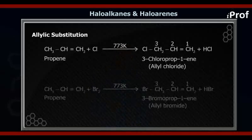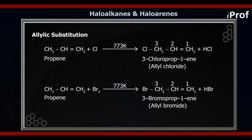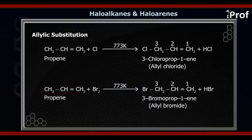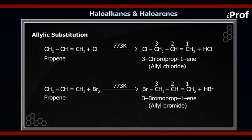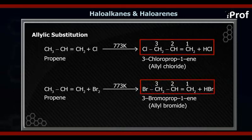Let us see an example now. Suppose we have an alkene: CH₃–CH=CH₂. In this, the CH₃ carbon is the allylic carbon. So if you add Cl₂ or Br₂ at 773 Kelvin, the product formed will be CH₂X–CH=CH₂, where X can be either Cl or Br.